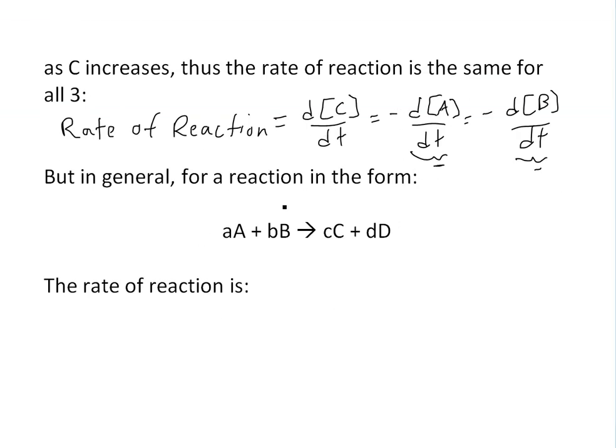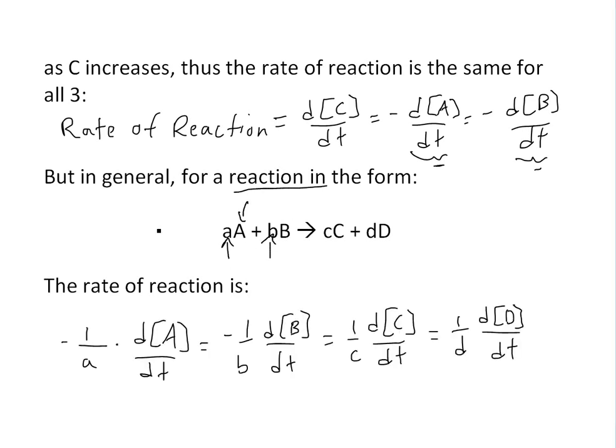But in general, for a reaction in the form where we have these constants—lowercase a, b, c, and d—and if these are the number of moles or molecules of each of these elements or molecules, then the rate of reaction... I'm not going to go over why this is, but I might do it in a later video. It's really similar to what I just stated above.